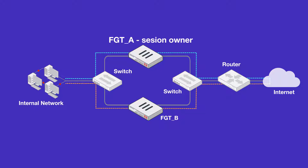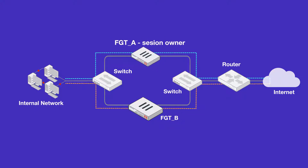The solution for this problem is to return traffic back to the original FortiGate for UTM inspection. This solution works when peer FortiGates are in the same subnet as well as when they are in different subnets.